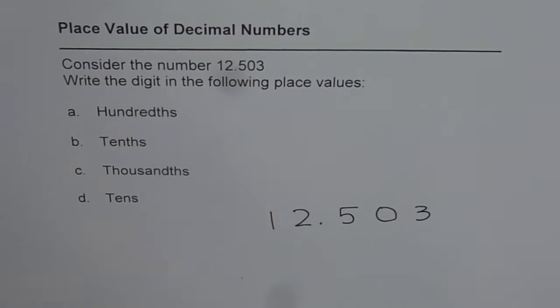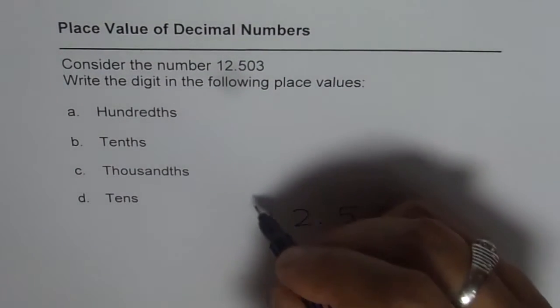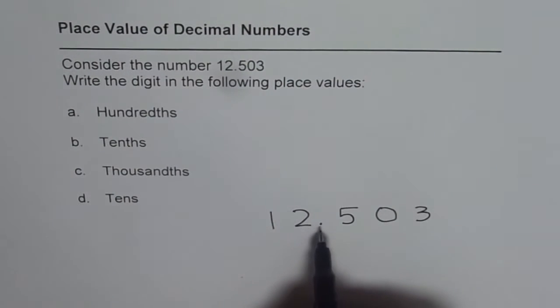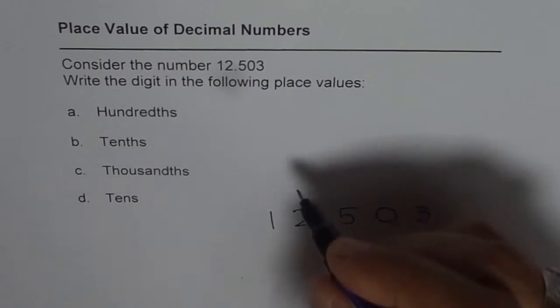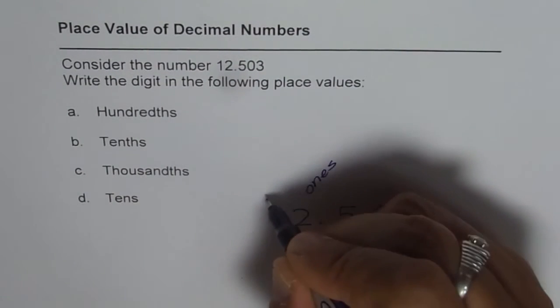And now, let's see the place values. Now, if you start from here, this is decimal, right? To the left, we have ones and tens. So this one is ones. And here we have tens.